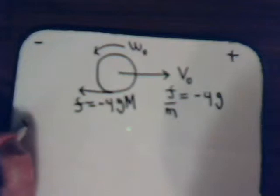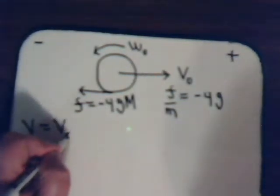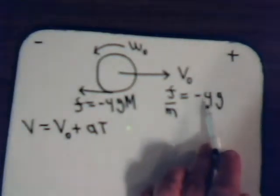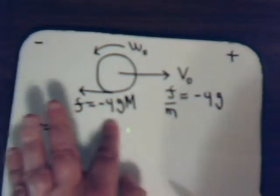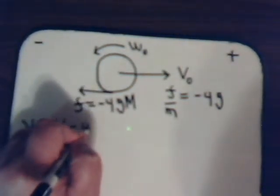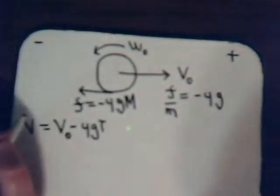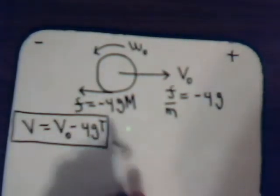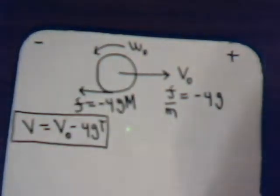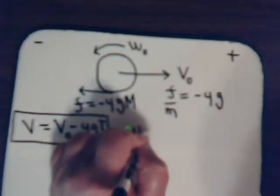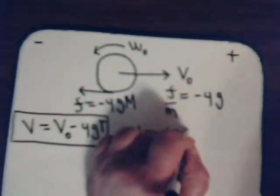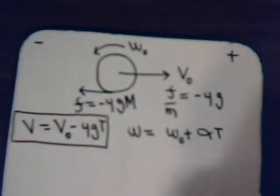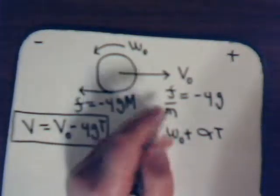We know in general that velocity equals V-naught plus acceleration multiplied by time. For our particular situation the acceleration is minus mu times g, so we have V equals V-naught minus mu*g times T. This is the general expression for the linear velocity of the bowling ball at any time T. For its angular velocity, the same type of general equation applies: omega equals omega-naught plus angular acceleration multiplied by time, with a minus sign since it starts in the negative direction.